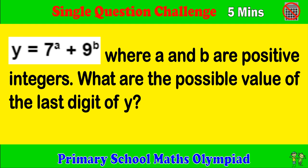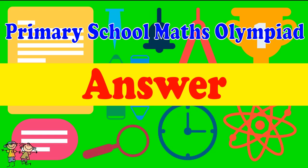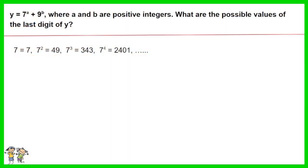Here is the recommended answer. 7 to the power of 1 is 7, 7 to the power of 2 is 49, 7 to the power of 3 is 343, 7 to the power of 4 is 2401. The possible last digit of 7 to the power of a is 7, 9, 3, and 1.